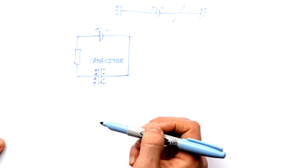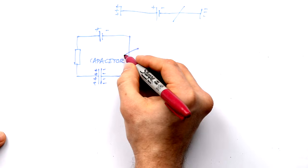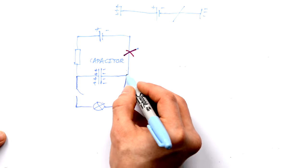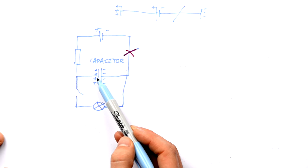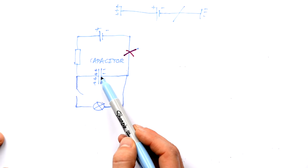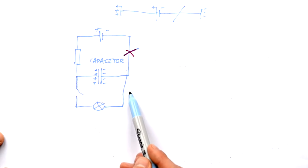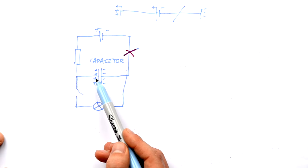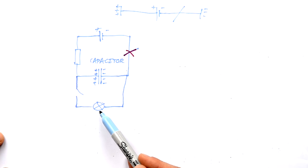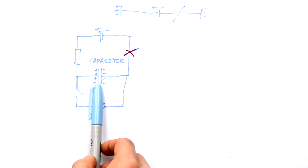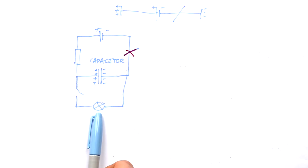One plate has lost electrons, the other has gained electrons. If we then cut the circuit and have another circuit attached in parallel with a bulb, the electrons want to get back to the positive plate but can't jump straight across — that would break the capacitor. Instead, they move all the way around the circuit through the bulb, lighting it up. This is the sort of circuit in a camera flash: it charges up the capacitor, and then the capacitor discharges quickly through a light bulb to produce a bright flash.